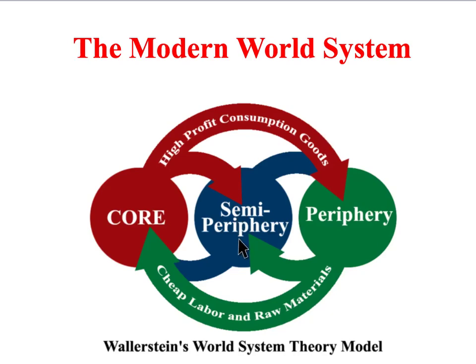The semi-periphery countries occupy a space somewhere between the core and the periphery. Such countries may be newly industrialising countries such as India or Brazil who aspire to core membership, or they may be former members of the core whose economic development has stalled or declined. Semi-periphery countries tend to be industrialised but with less technological sophistication than the core, and they don't tend to have the developed banking, insurance, and research industries found in the core. Core nations often outsource manufacturing jobs to the semi-periphery to exploit their relatively low labour costs, though most of the profits still go back to the core.